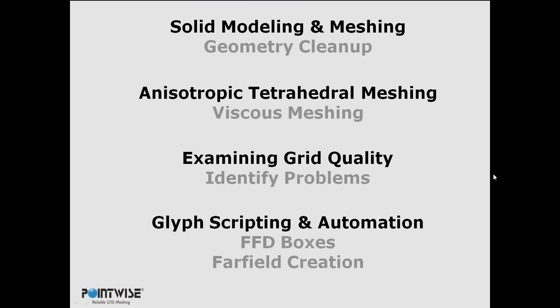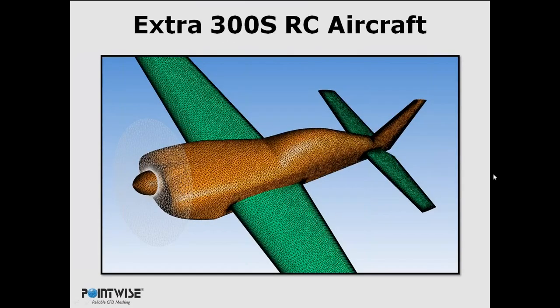This is the geometry I'm going to be using for the entire afternoon. We're going to clean it up, put a surface mesh on it, volume mesh it, look at its grid quality, and create an FFD box for the spinner. This aircraft doesn't have a spinner included. With the grid deformation in SU2, we can create an approximate representation of a spinner, which serves two purposes: reducing drag and providing cleaner flow to the engine compartment. It's an electric or gas-powered RC aircraft, so that's important. We'll create a good representation of a spinner, create an FFD box for it, and pass it off to SU2.